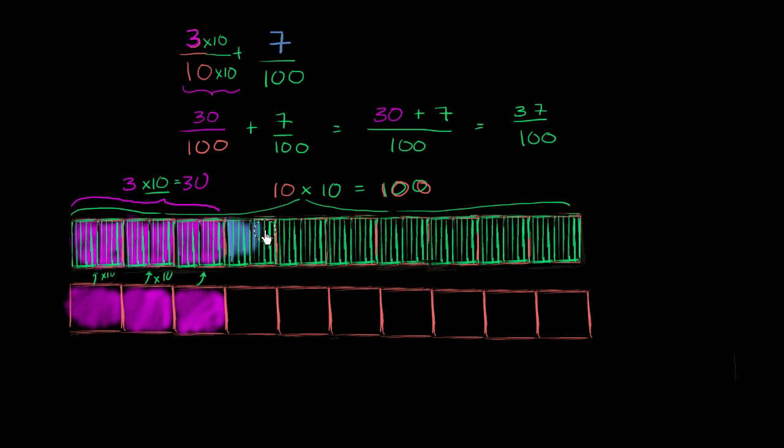1, 2, 3, so 7 hundredths. 7 hundredths is right over there. This right over here is 7 out of the 100. So 30 hundredths plus 7 hundredths is going to get us to 37 hundredths.